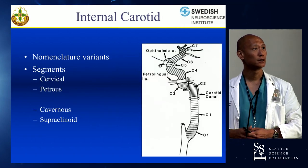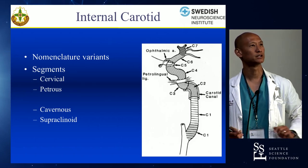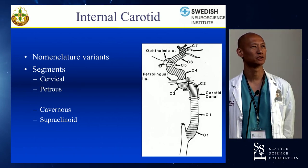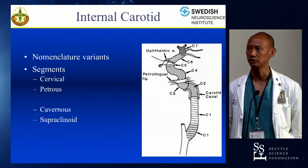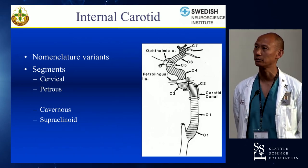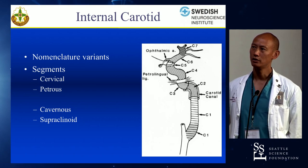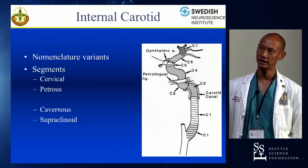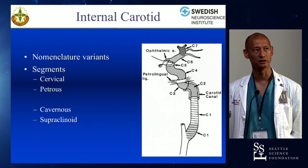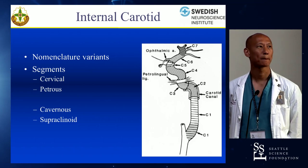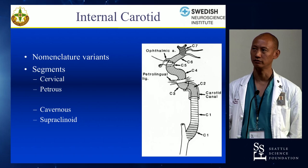Moving on to nomenclature of the internal carotid artery, both extracranial and intracranial: the classic four segments are cervical, petrous, cavernous, and supraclinoid. As it leads up to the skull base, it enters the skull base and becomes a petrous segment. There is an artificial segmentation between the petrous and cavernous because both of those actually — a segment of the cavernous is still running through the bone.